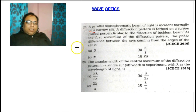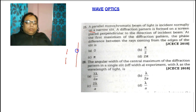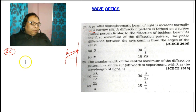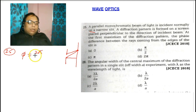Consider the slit — we have to calculate the phase difference between rays from the two edges. We have the formula for phase difference: φ = (2π/λ) × A × sinθ, where A is the slit width and θ is the angle of diffraction.